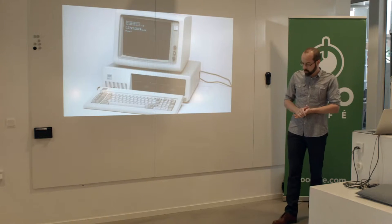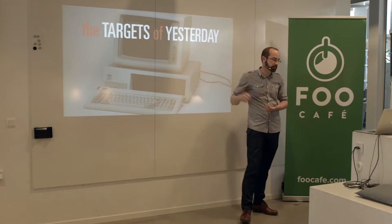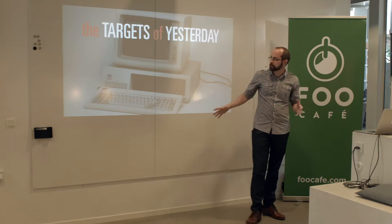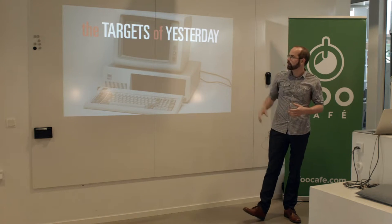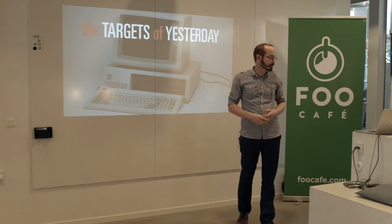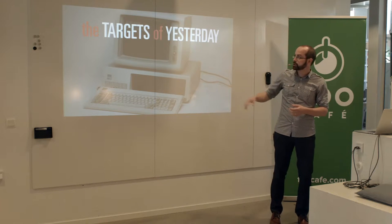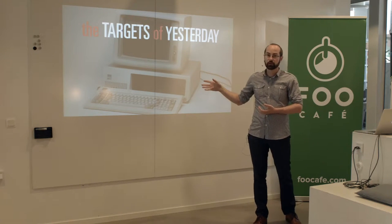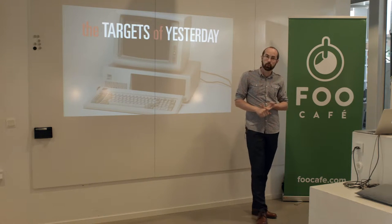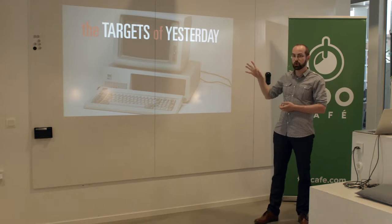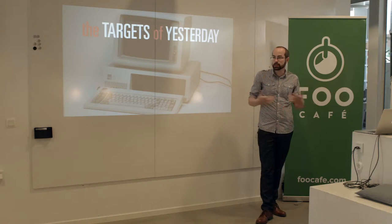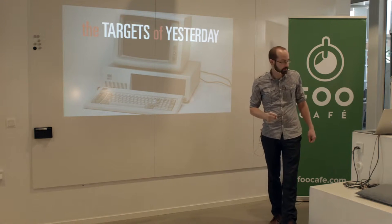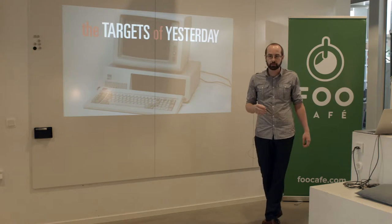What has the attack surface looked like up until today? An attack surface is basically the playing ground for a hacker or malicious software. Nowadays we might have slightly nicer-looking boxes, but they're still the same components inside. We're quite good at protecting this — we know how to protect computers, and we have the knowledge, skills, and software. When we have breaches here, it's often down to the user. I'll run through a few threats that will also apply to the Internet of Things.